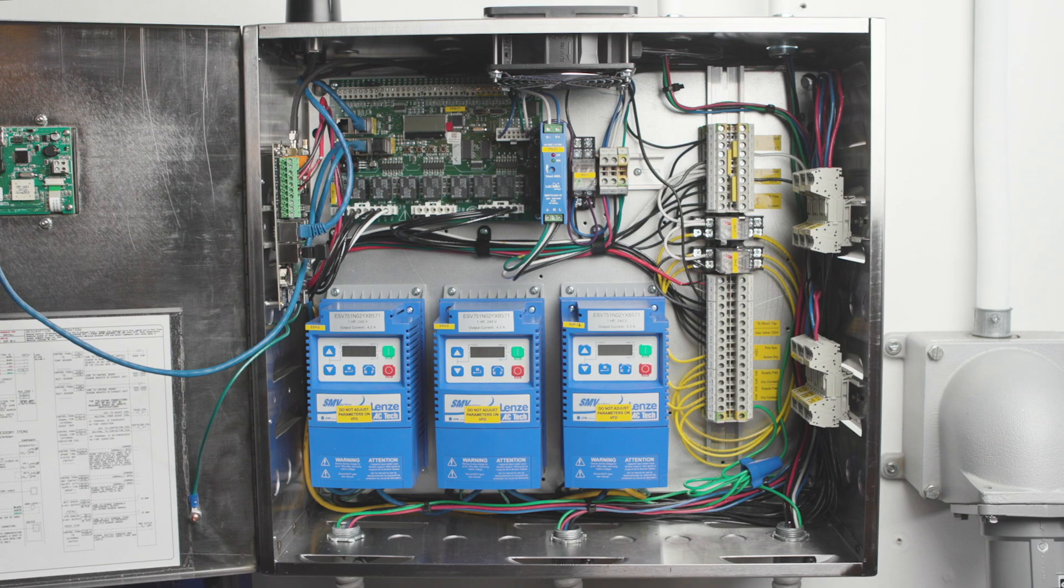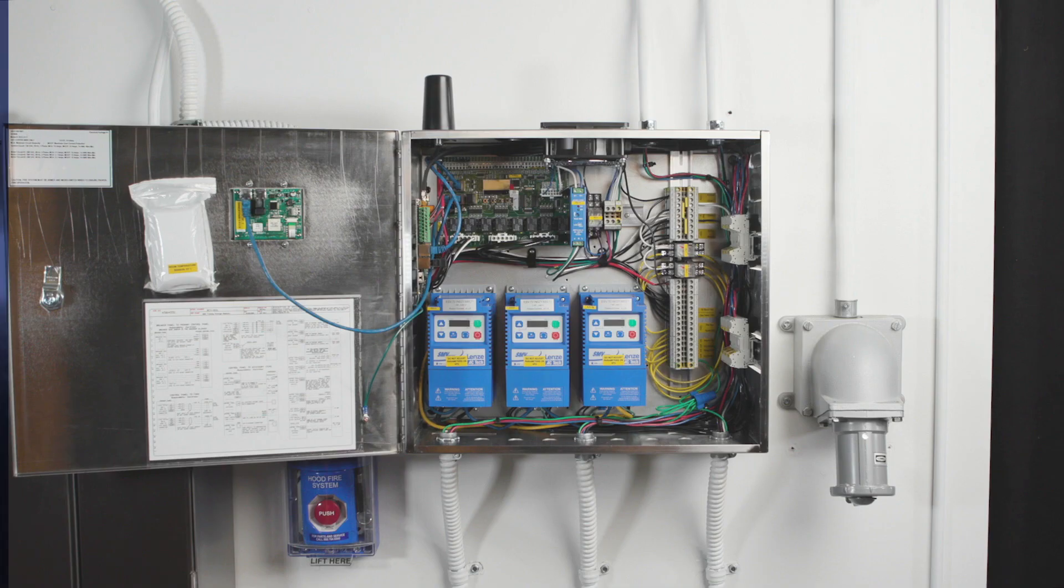Other common components may include contactors, variable frequency drives, cellular modules, relays, and power supplies. The key to truly understanding the control package is by referring to the wiring diagram attached to the door.